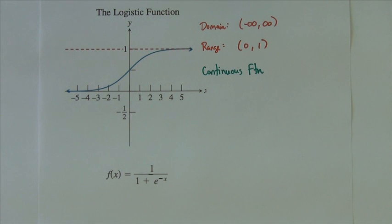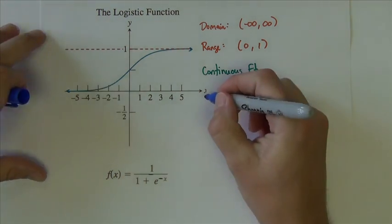So it is not even, it is not odd. It does have asymptotes.